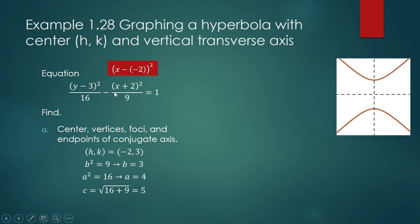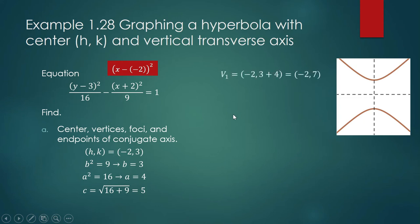The denominator that comes after subtraction is always your B squared. So B squared is 9, B is 3, and the other denominator is A squared. A squared is 16, A is 4. C squared equals A squared plus B squared, so C squared equals 25, and C equals 5. We shall need these values to locate the coordinates of your vertices and endpoints of your conjugate axis.